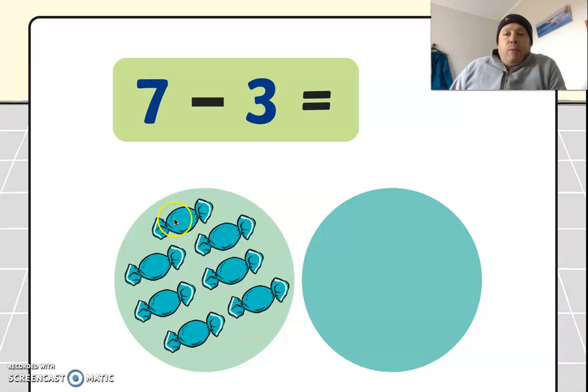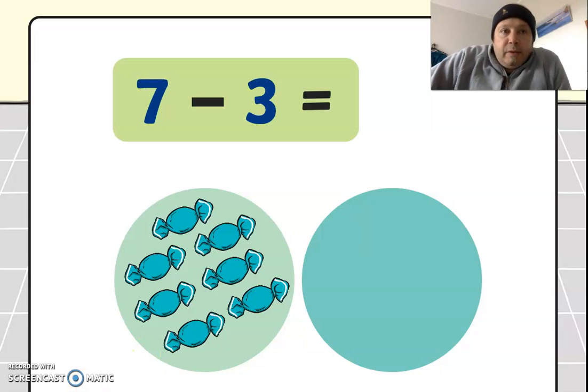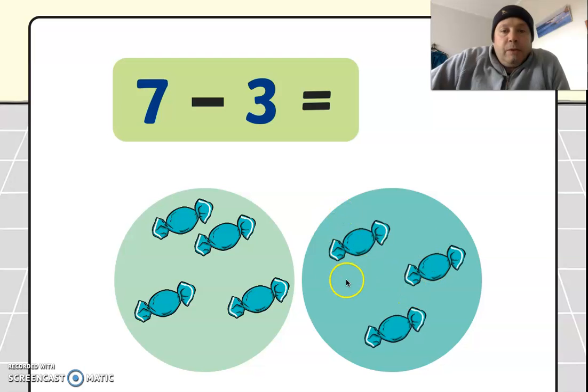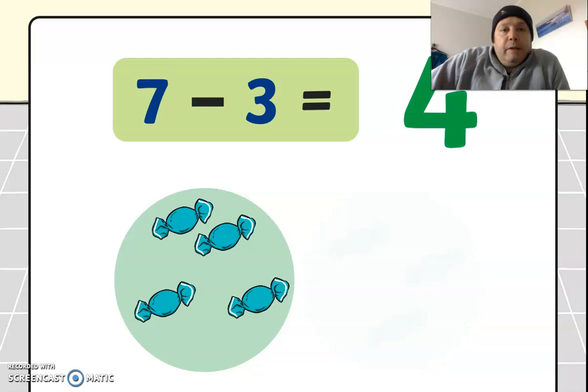We've got here one, two, three, four, five, six, seven candies or seven lollies. And then the question is seven take away three, so we're going to take away three, there we go, one, two, three, and how many is left? One, two, three, four, the answer will be four.